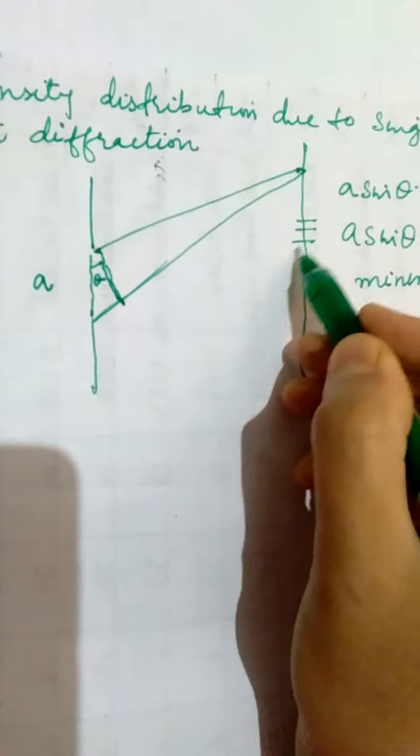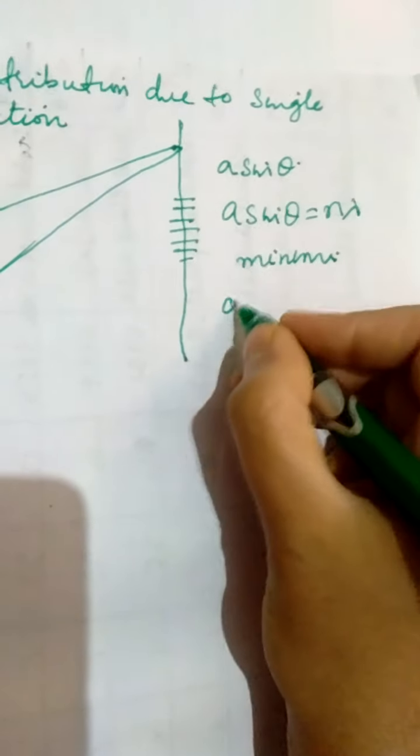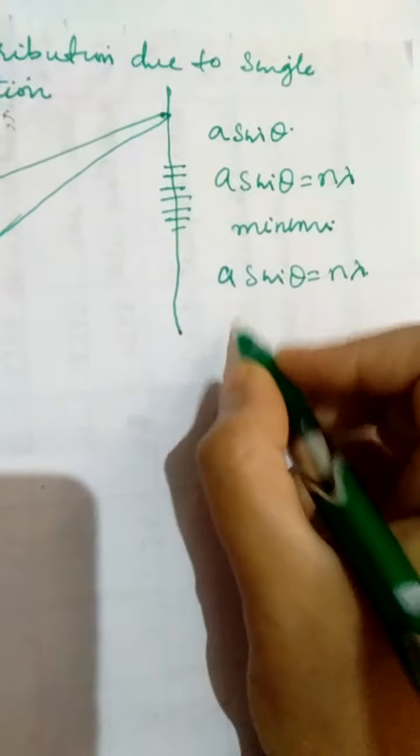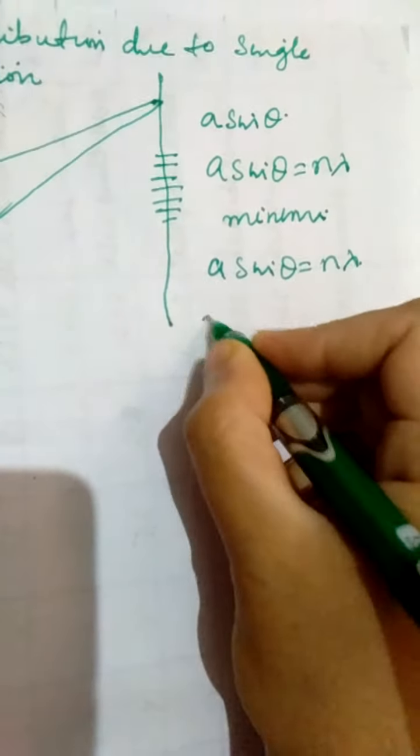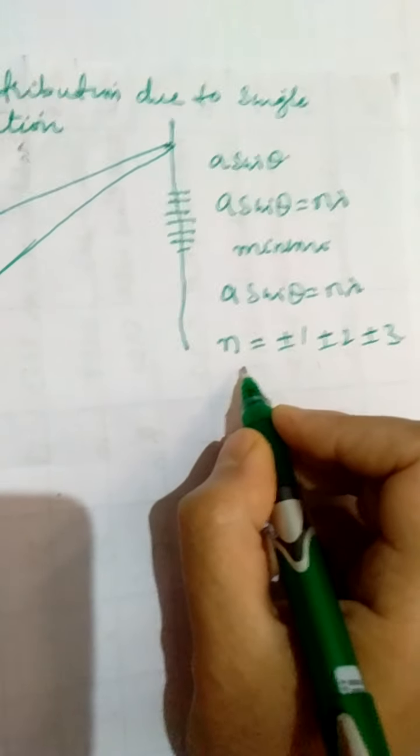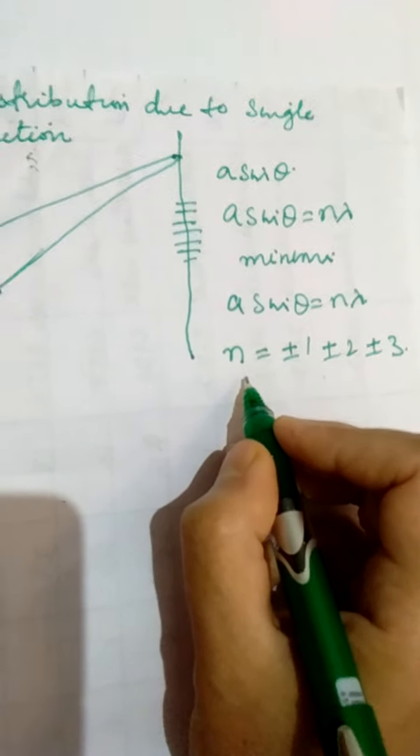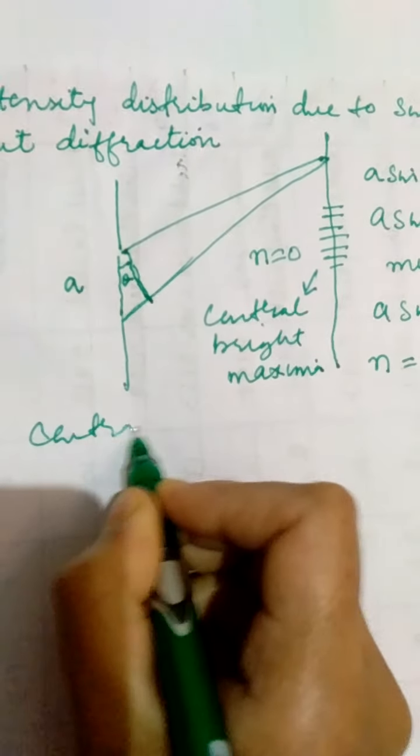If you recall, we mentioned that the central portion is always bright because constructive interference is taking place in that region. Therefore, a sinθ = nλ implies that n can take all possible values: ±1, ±2, ±3, but not zero. In case of interference we start from n = 0, but in case of diffraction we start from n = 1, 2, 3 and so on, because n = 0 is already defined — the central portion is a maxima, a central bright maxima.